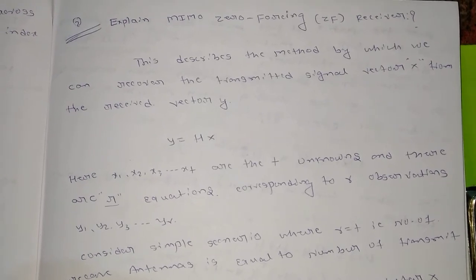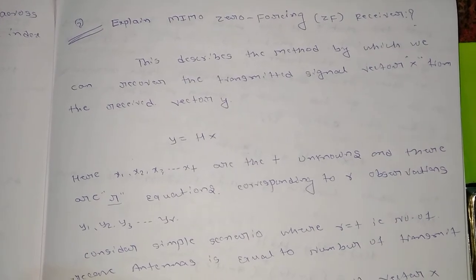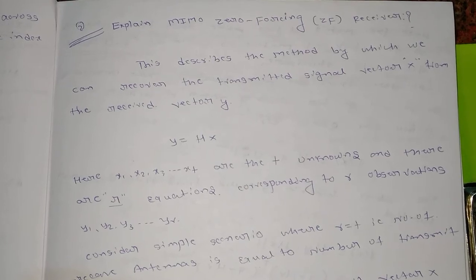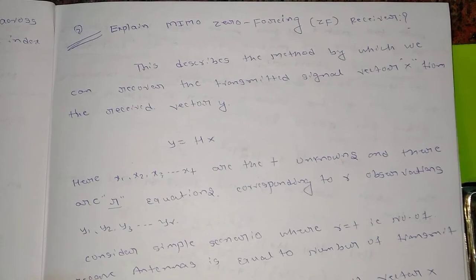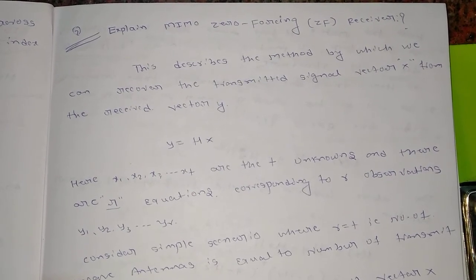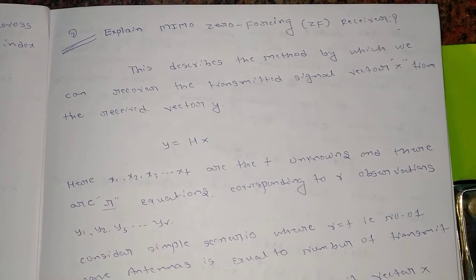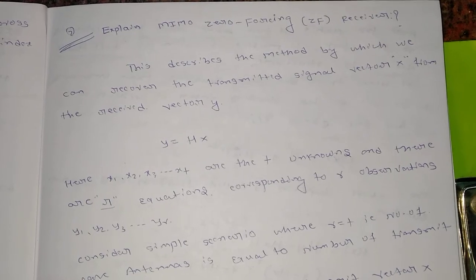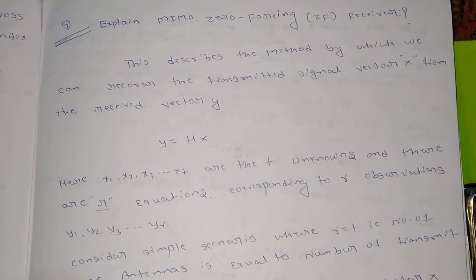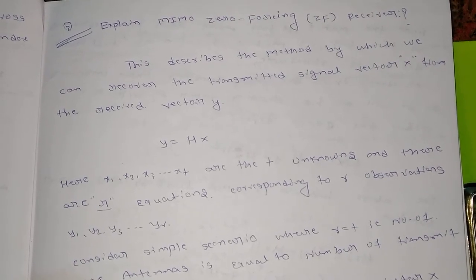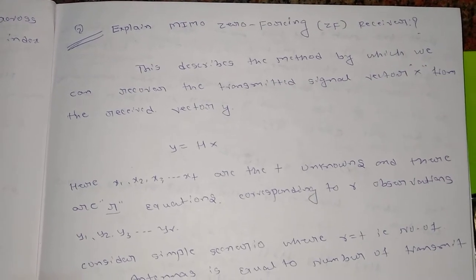Welcome back. We are discussing 3G/4G wireless communication. We have already covered topics like what is MIMO, how to create a system model for MIMO, and we have discussed SISO systems, SIMO systems, MISO systems — having one transmitting antenna with many receiving antennas, or many transmitting antennas with one receiving antenna, and a single transmitting and single receiving antenna called a SISO system.